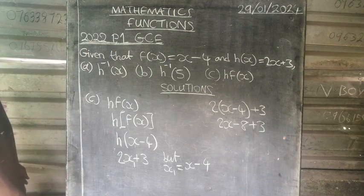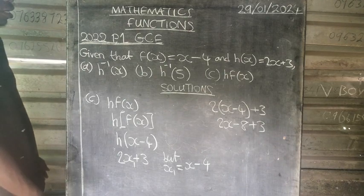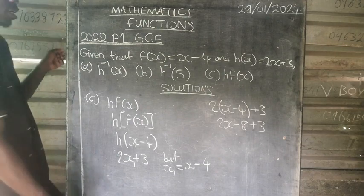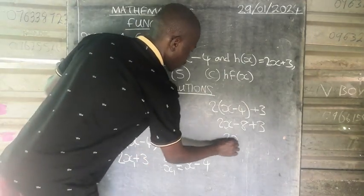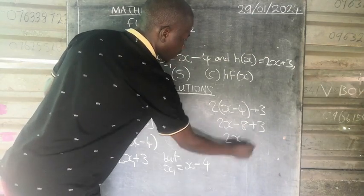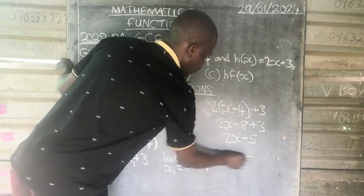So now we have to simplify further the like terms. We have negative 8 and 3, which is going to be 2x. Negative 8 plus 3 is negative 5, so the answer is 2x minus 5.